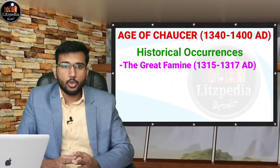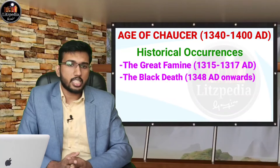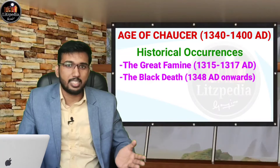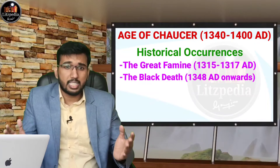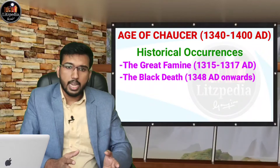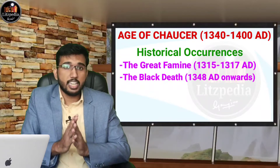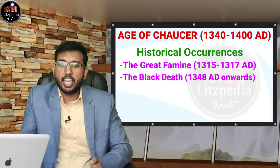From 1348 onwards, we can see the Black Death, which was an attack of bubonic plague. The shortage of food from the famine decreased people's resistance, which contributed to the high death toll. This bubonic plague ravaged the Middle East and Europe, reaching England in 1348 and reappearing several times. One third of the English population died during the Black Death. It also led to social chaos, labor shortages, the Peasants' Revolt, and the introduction of the wage system.